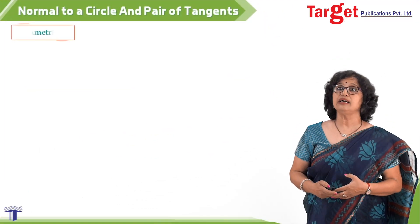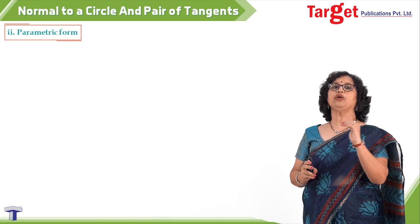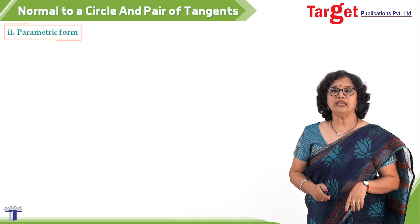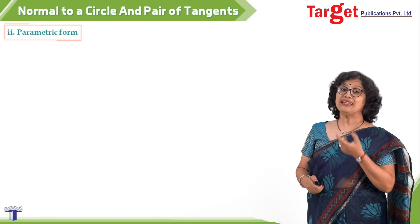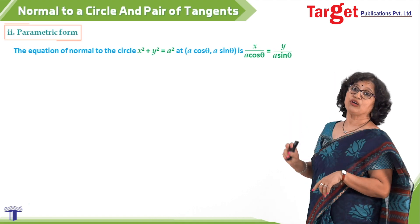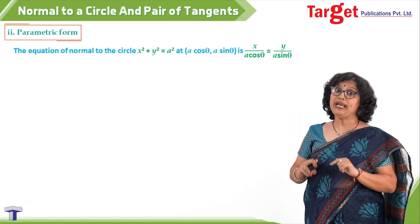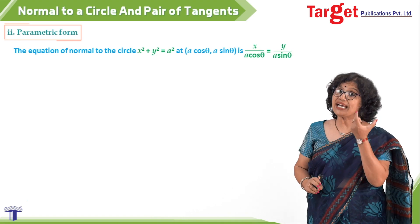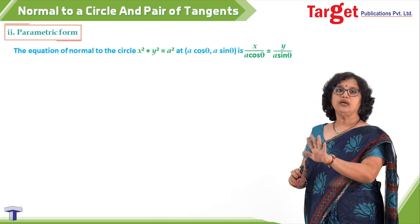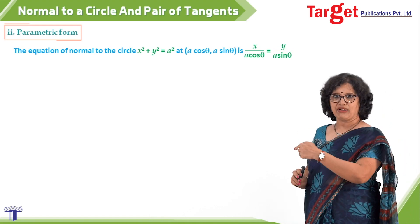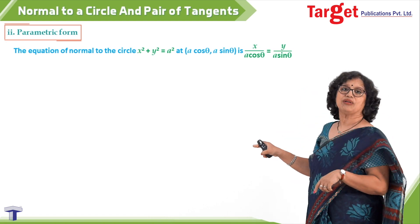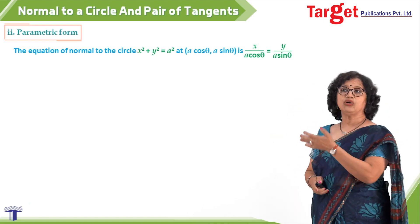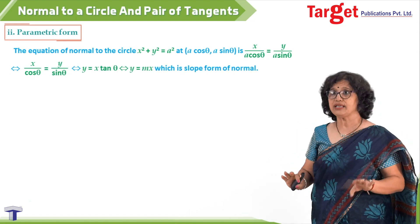Next is the parametric form. We have seen parametric form in straight lines and in the equation of the circle. For x² + y² = a², a point on the circle in parametric form is (a cosθ, a sinθ). Replace x1 by a cosθ and y1 by a sinθ in x/x1 = y/y1, giving x/(a cosθ) = y/(a sinθ).